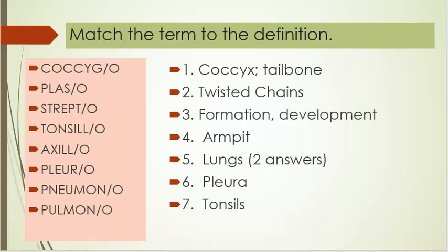Number three: formation, development. Number four: armpit. Number five: lungs, and it has two answers. Number six: pleura. Number seven: tonsils.